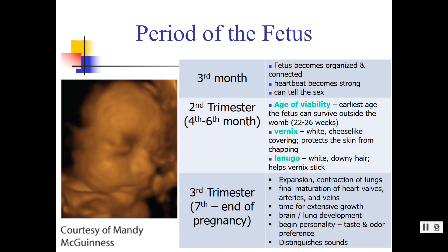The organism is preparing itself. It develops vernix — a white, chapstick-like coating all over the body — and lanugo, a white downy hair that grows through the vernix and helps it stick, making passing through the birth canal a little easier. In the seventh to ninth months, depending on when the organism is born, everything is maturing: the lungs, the heart, extensive growth. Personality and preference are starting to develop as this organism gets ready to join the outside world.